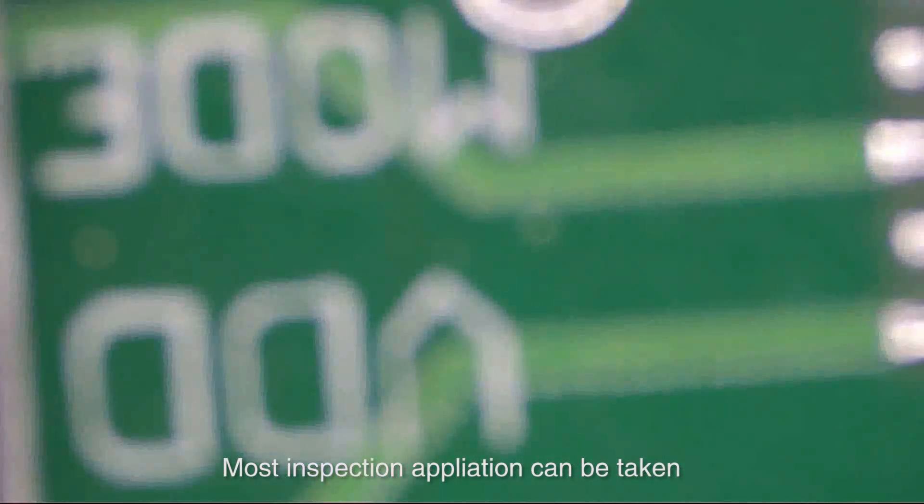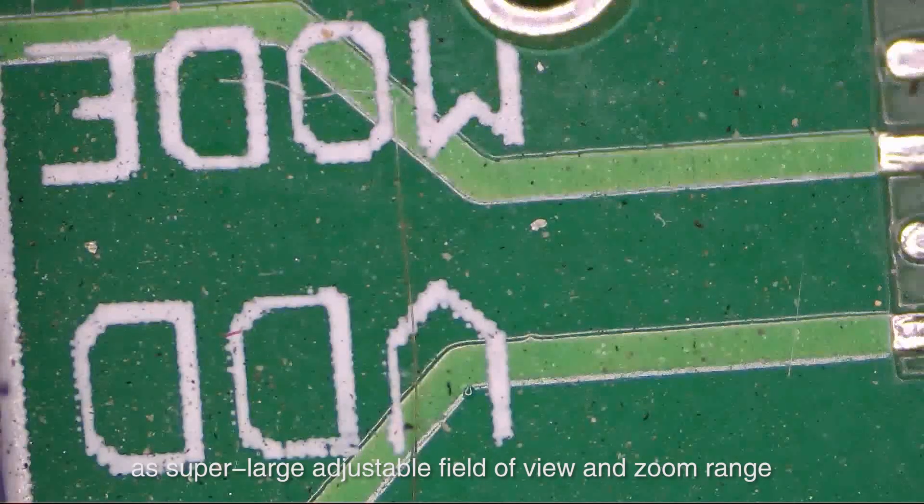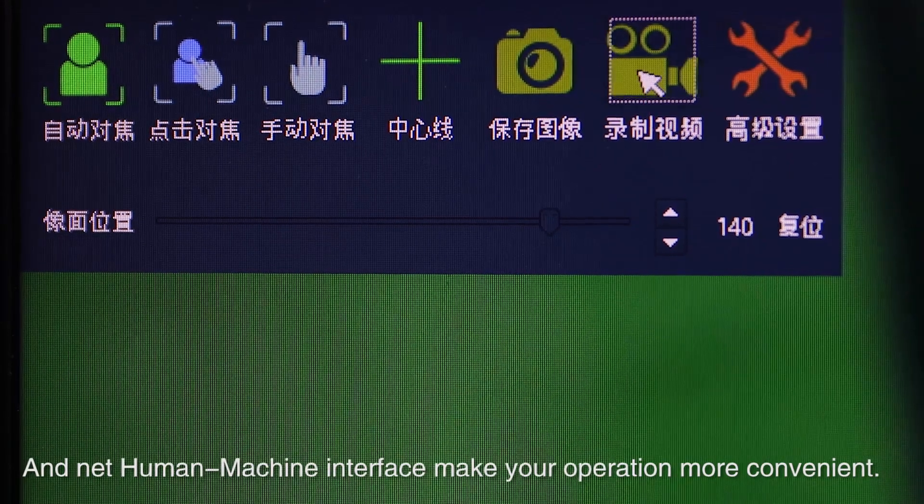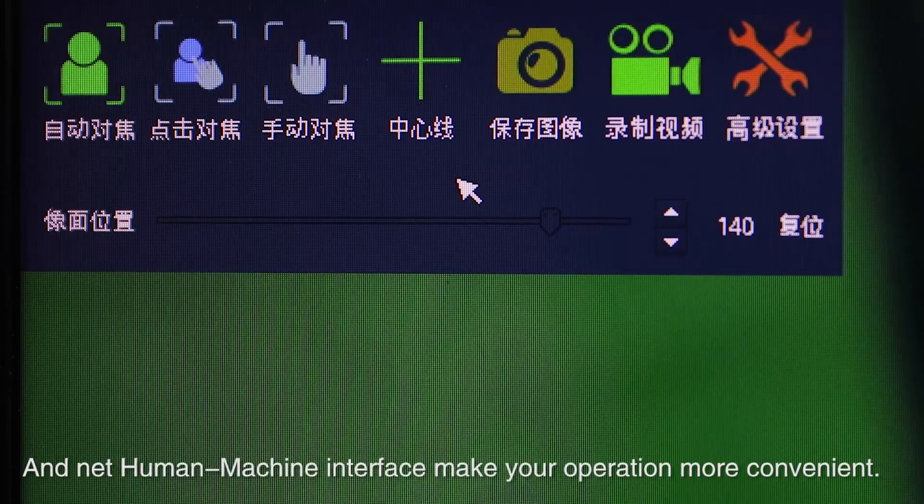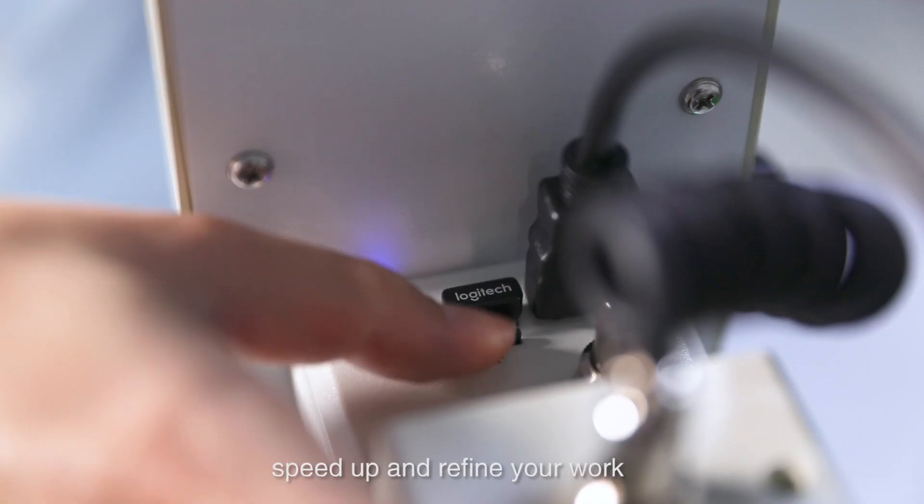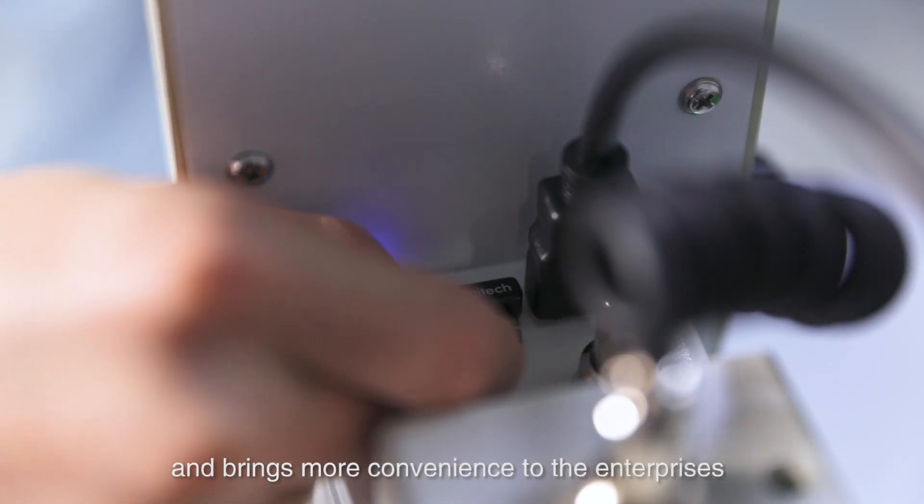Most inspection applications can be taken at super-large adjustable field of view and zoom range, and the human machine interface makes your operation more convenient. Pomius Autofocus Video Microscope indeed speeds up and redefines your work and brings more convenience to the enterprises.